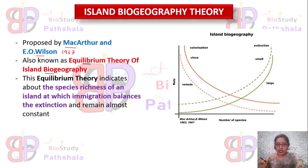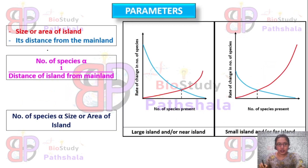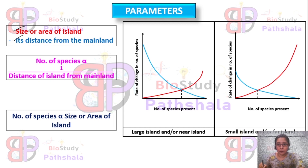The theory is called the Equilibrium Theory because it indicates the point at which the species richness of the island shows immigration and extinction values that are equal. This equilibrium value remains almost constant for that particular island. The parameters that may affect the equilibrium of a particular island are: first, the size or area of the island, and second, its distance from the mainland.